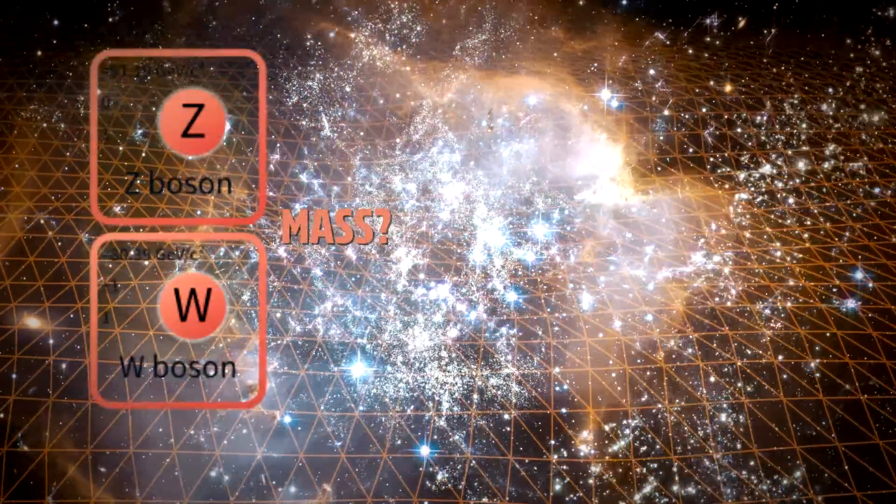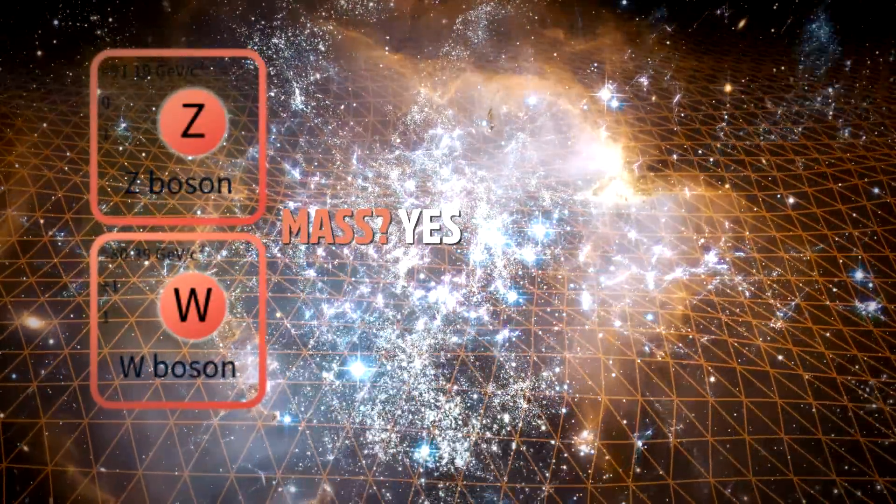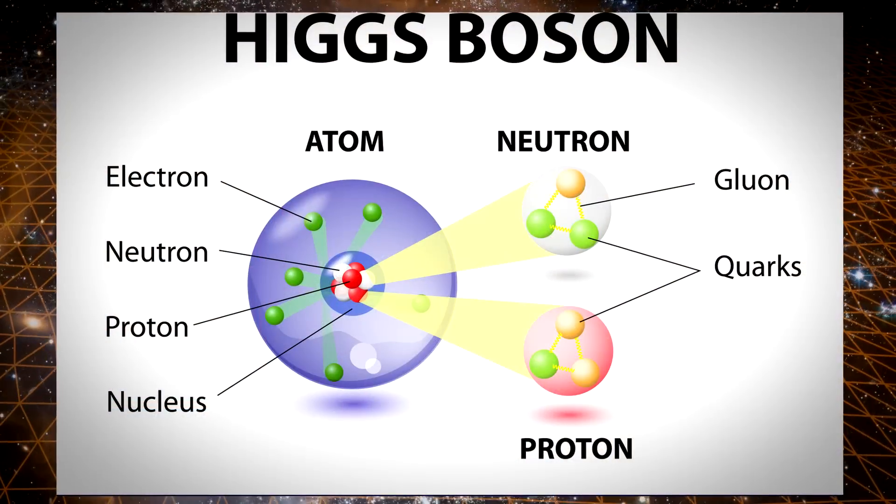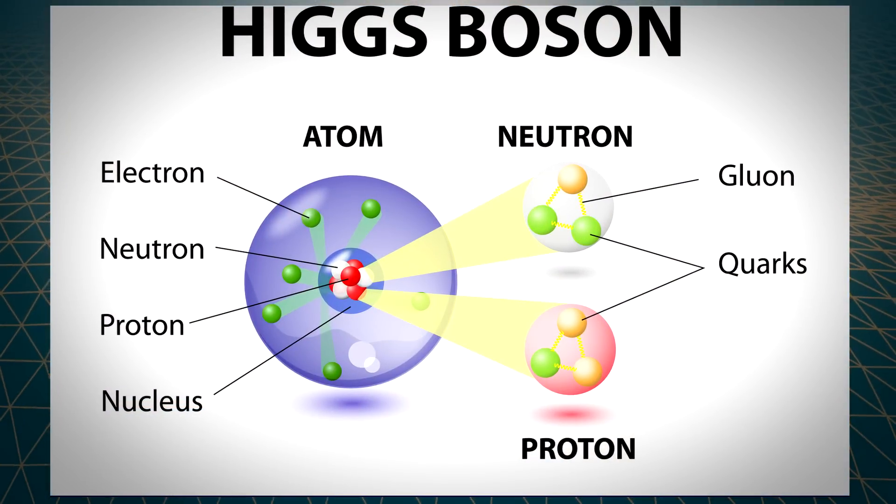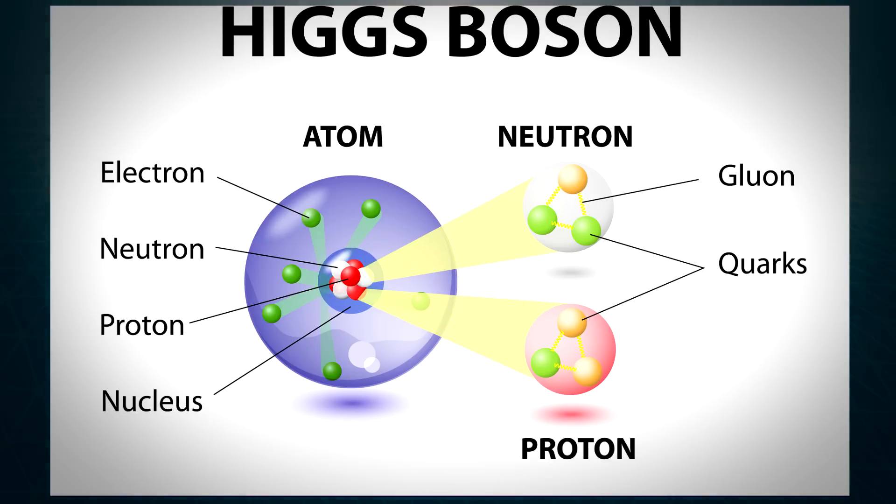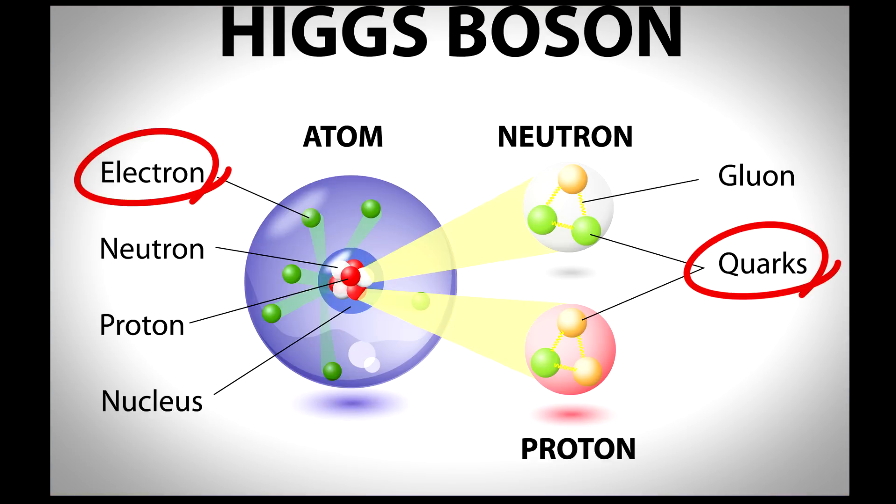When the weak force bosons acquire mass, this affects their range, which becomes very small. It was later realized that the same Higgs field also explains why other fundamental constituents of matter, like electrons and quarks, also have mass.